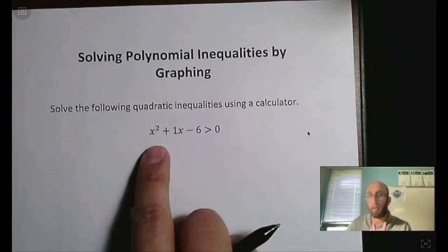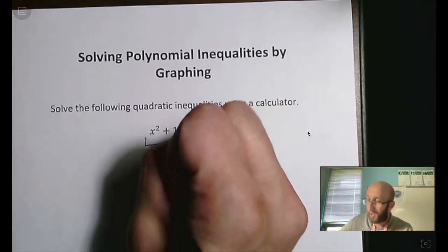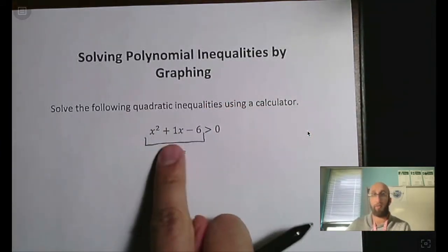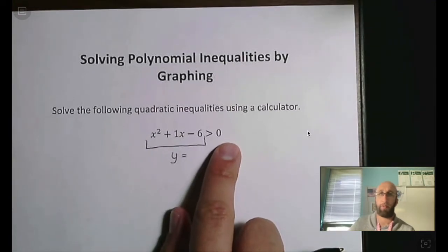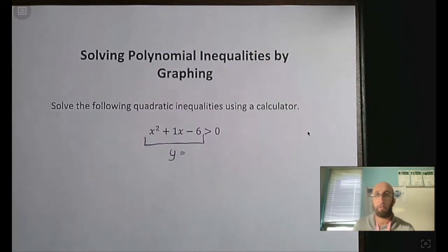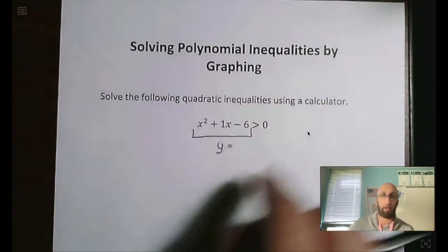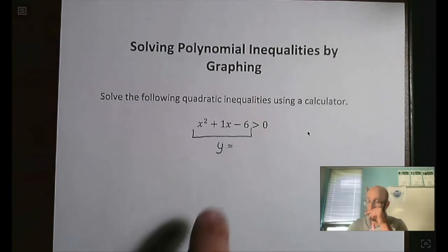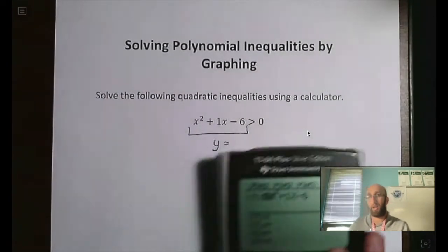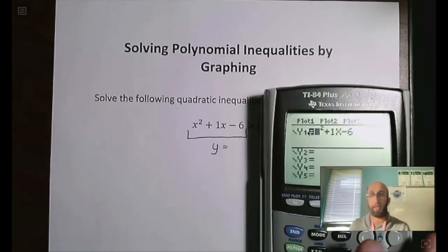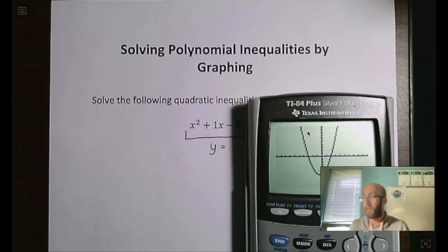So we have x squared plus 1x minus 6. What I'm going to do is take this left side and plug it into y equals. If you ever receive a problem where it's not equal to zero on the other side, move everything to the left side, subtract or add it all over to get it equal to zero. Then take x squared plus 1x minus 6 and put that into y equals on your calculator and graph it.